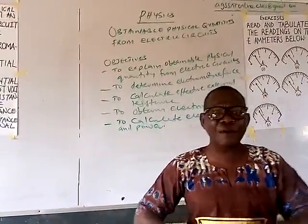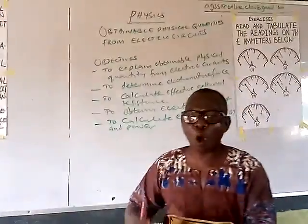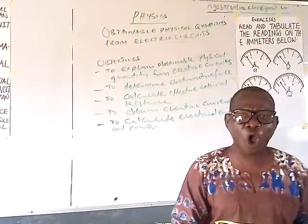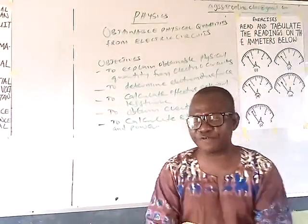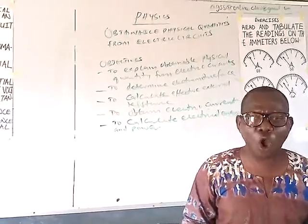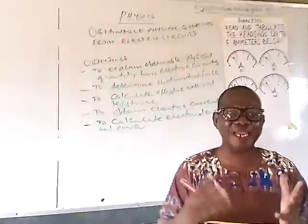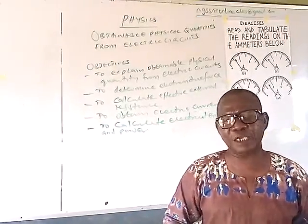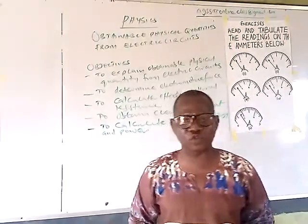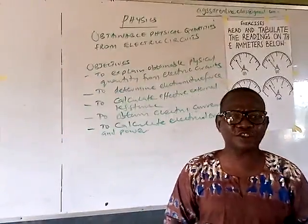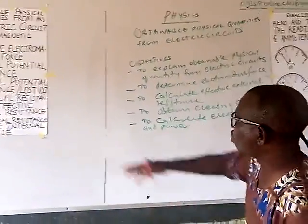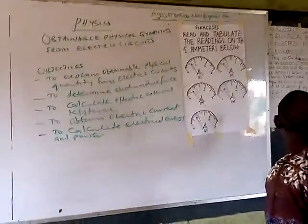The word 'effective' applies when we have more than one cell or more than one resistor in the circuit. Effective can be replaced with equivalent or total — meaning you are combining the values of those components together, whether cells or resistors. You can also be asked to calculate electric current, electrical energy, and power.